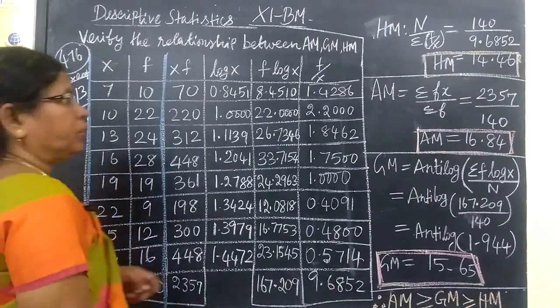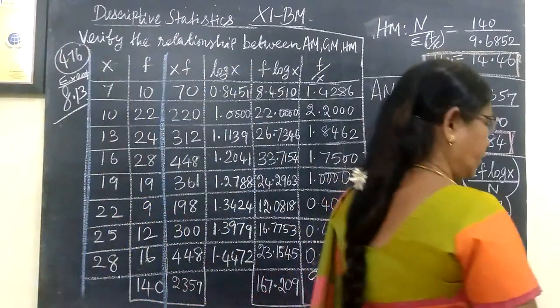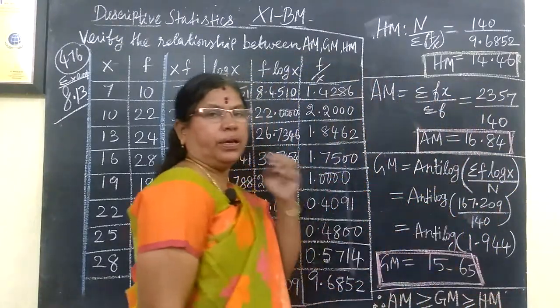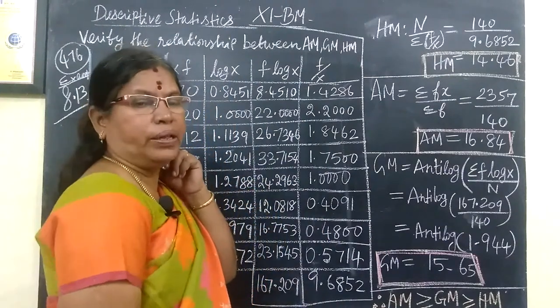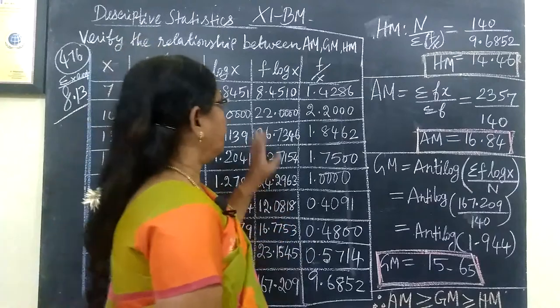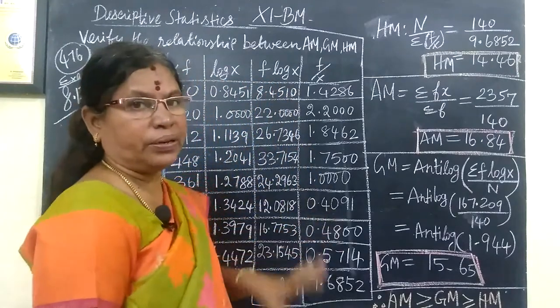Now we want to find three things: harmonic mean, geometric mean, and arithmetic mean. First we get the formulas. According to that, we are making the tabular column.